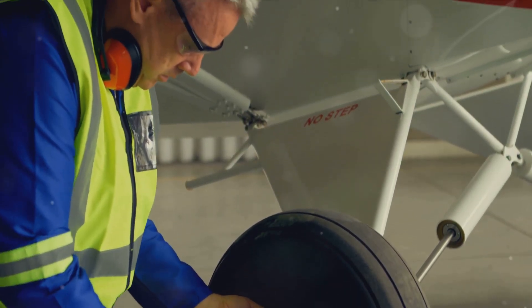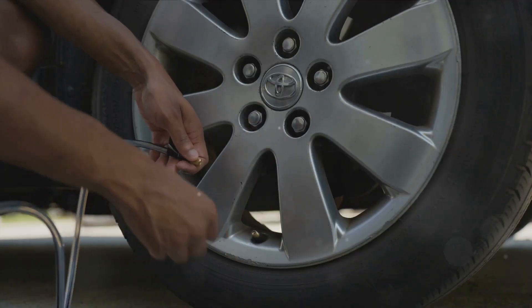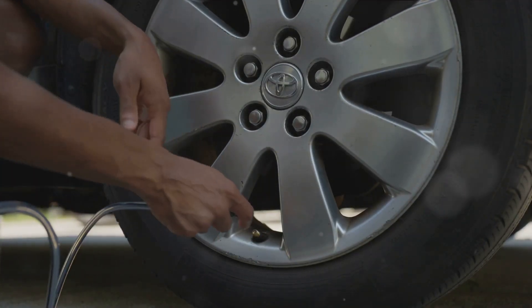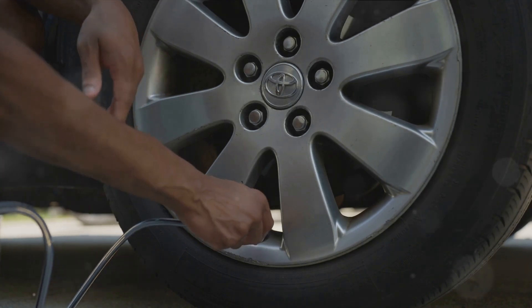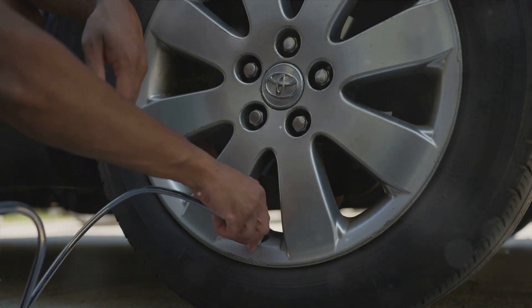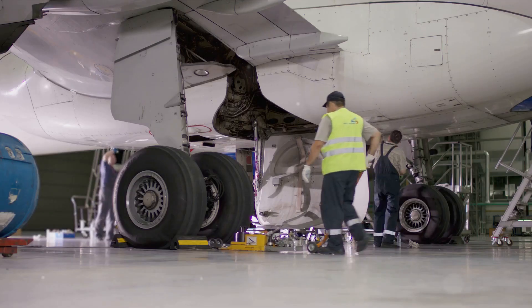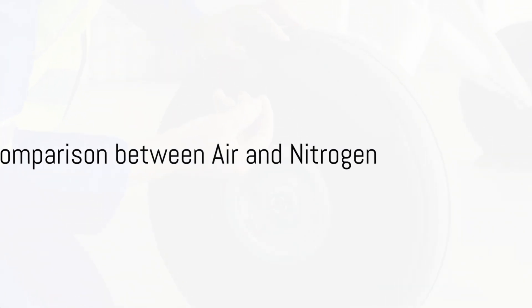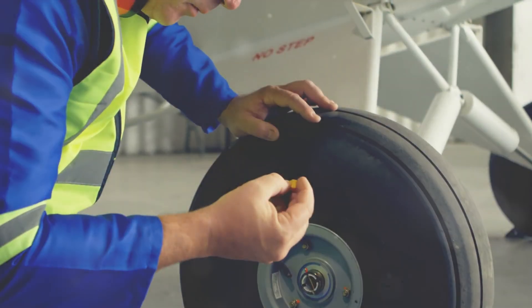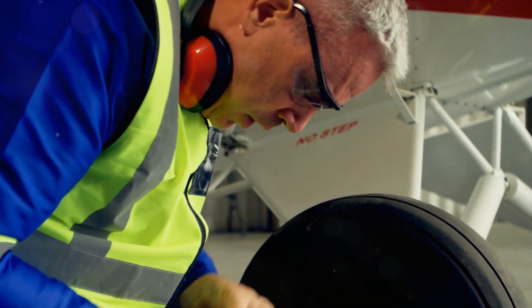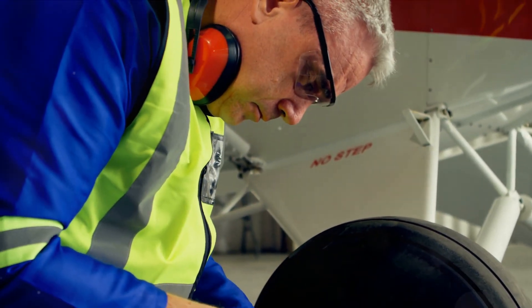So, it's clear that nitrogen's unique properties make it a safer and more reliable choice for inflating aircraft tyres. By understanding the science behind nitrogen inflation, we can appreciate the careful considerations that go into ensuring our flights are as safe and smooth as possible. Now, you might be thinking, but isn't air mostly nitrogen anyway? Why can't we just use that? Good point, but let's dive a little deeper.